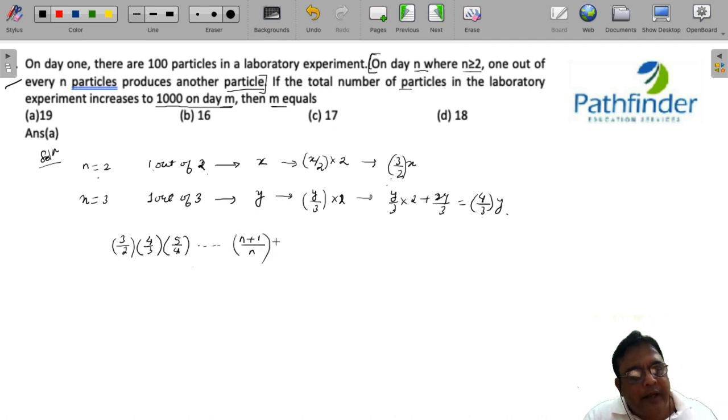And the whole of this multiplied by 100 should give me 1000. You can see that these numbers are getting cancelled out, so what will remain is n plus 1 by 2 multiplied by 100, which is equal to 1000.